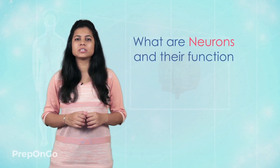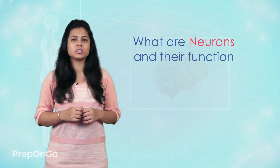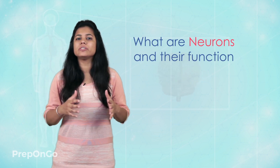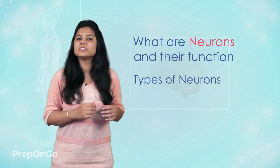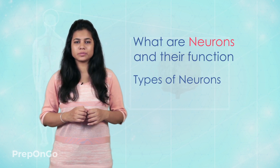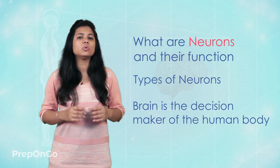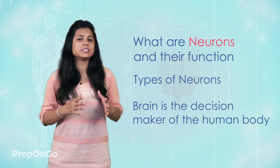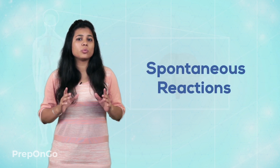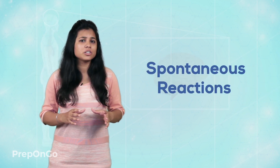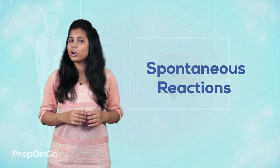Hello everyone. In the last video we had seen what are neurons and how they function. We have also seen two different types of neurons, that is sensory neurons and motor neurons, and at last we concluded that brain is the decision maker of most of our actions. We also raised a question that there are some actions which do not involve the brain.